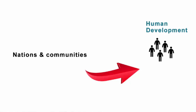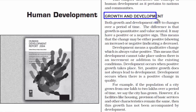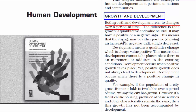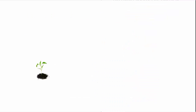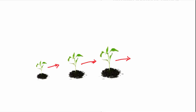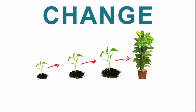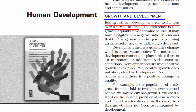Nations and communities is all about human, and human development has a big correlation. The first topic is growth and development. Both words share a common link: they are changes over a period of time. To grow or develop anything from a present state to something else is called change. If things don't change, there will be no growth and development.